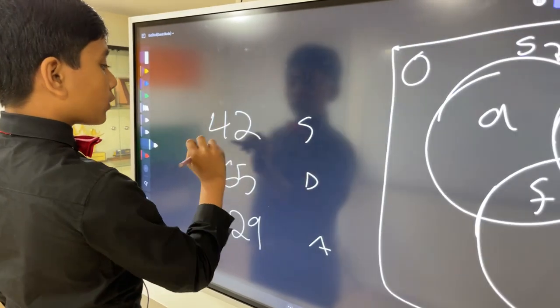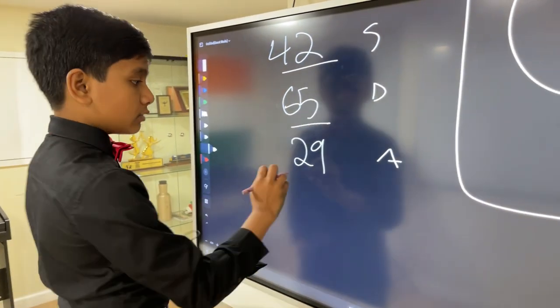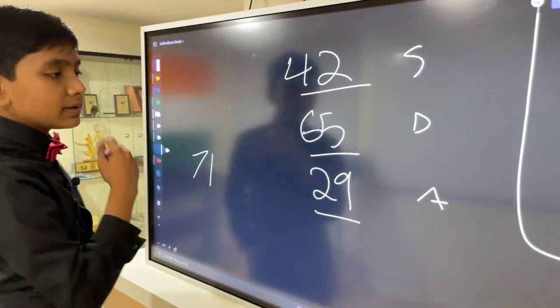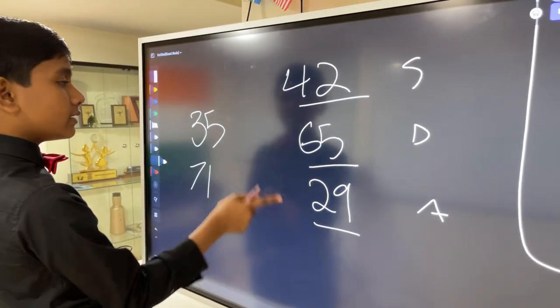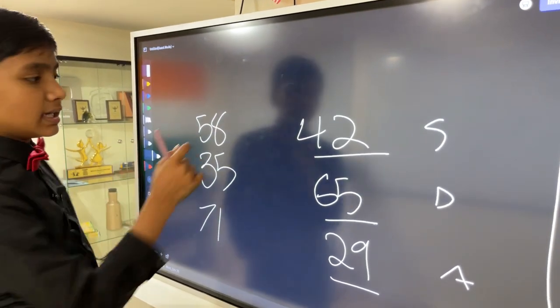We know 42 people can't sing, 65 people can't dance, 29 people can't act. So that means 71 people can act, 35 people can dance, and 58 people can sing.